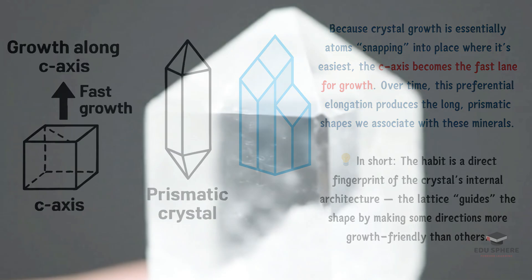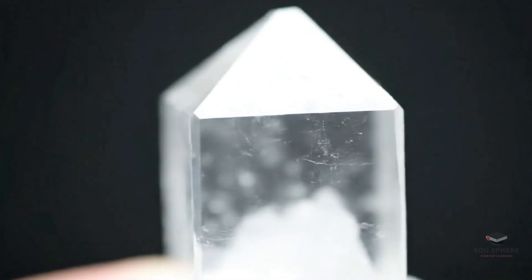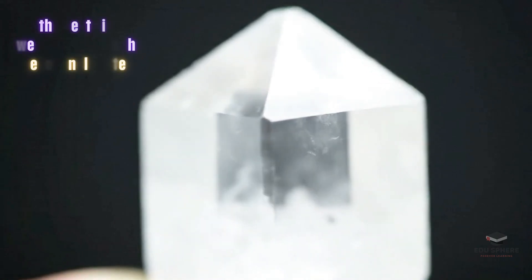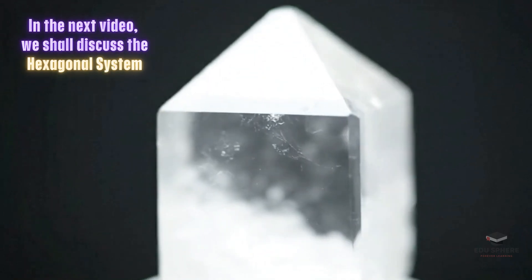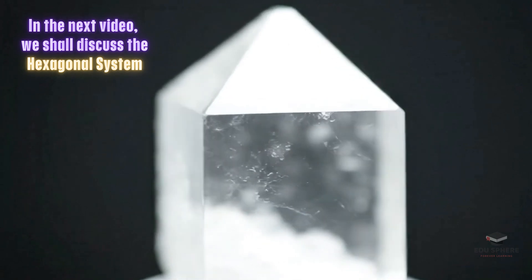A mineral's outward appearance is a direct clue to its secret internal symmetry. We've seen what happens with three axes, both equal and unequal. But what if a crystal system decided it needed four axes to build its structure? Things get a little more complex and a lot more hexagonal. In the next video, we'll explore the beautiful six-sided world of the hexagonal system.